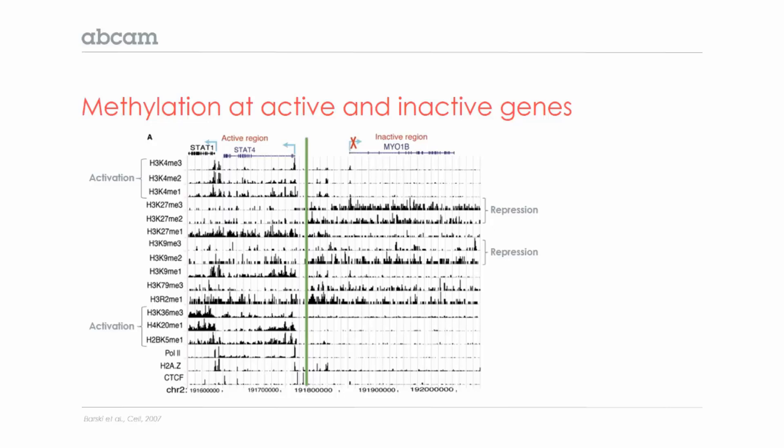You can see that activating histone marks, such as H3K4 methylation, at the top left, are present at the active genes, especially at the gene promoters, but are absent from the repressed gene.